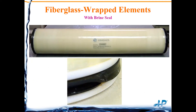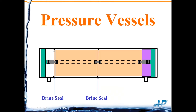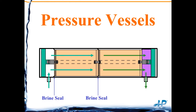Membrane elements for most industrial applications are fiberglass wrapped, and all RO membrane elements look essentially the same regardless of manufacturer. On the feed end of each fiberglass-wrapped membrane element, there's a brine seal. This brine seal doesn't allow feed water to go on the outside of the membrane element, forcing the feed water to go through the membrane element and then exit.